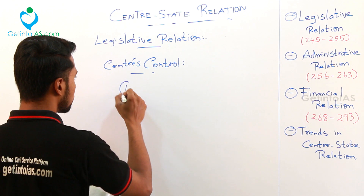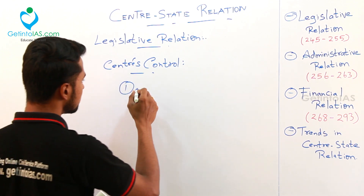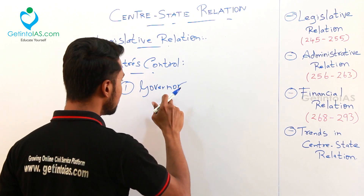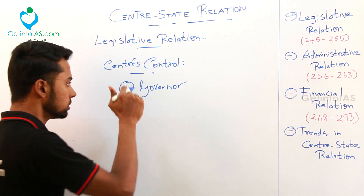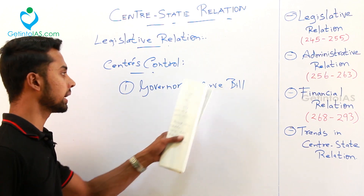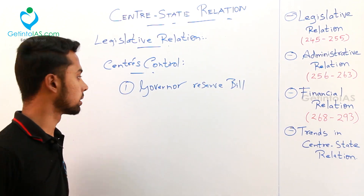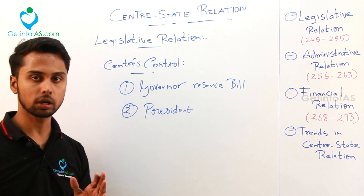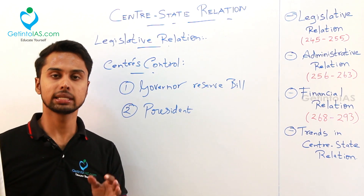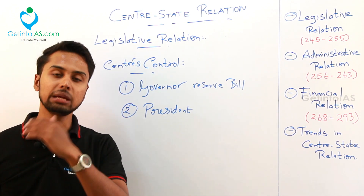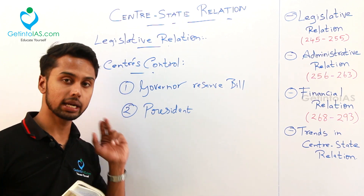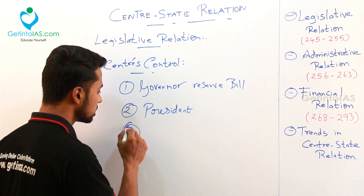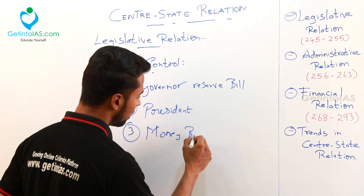When dealing about center-state relations, you should know about federalism. Now, this problem between center and state did not happen till 1967, because till 1967 there was only one-party rule — Congress was at the center and ruling in all the states. But after 1967, state governments got replaced by another party like BJP and other local governments.